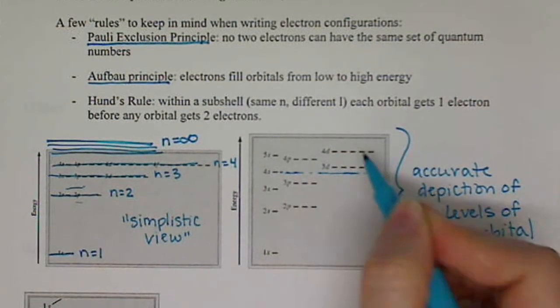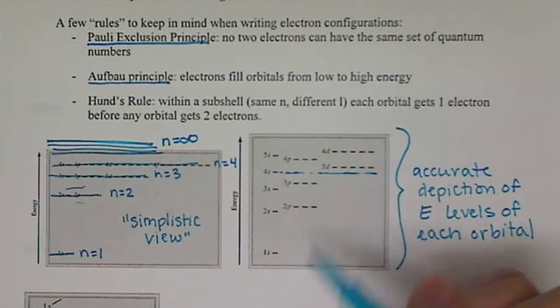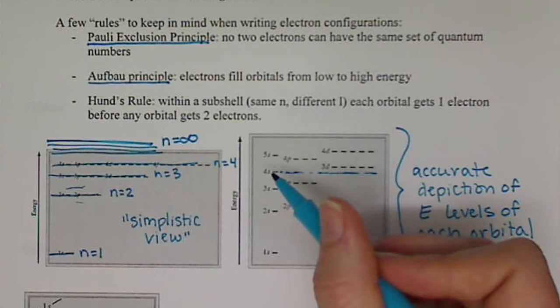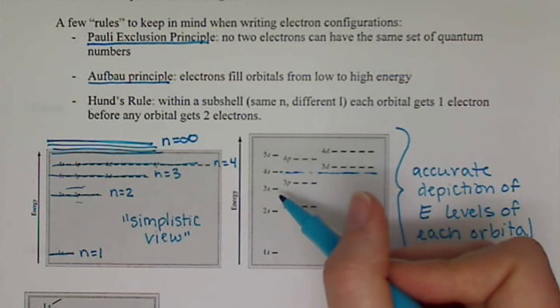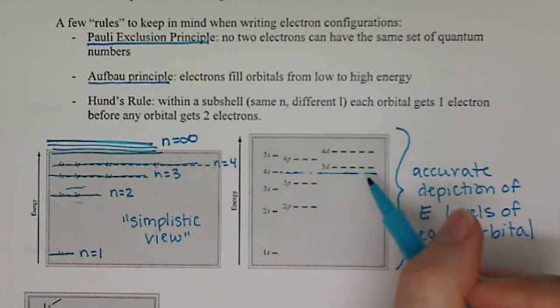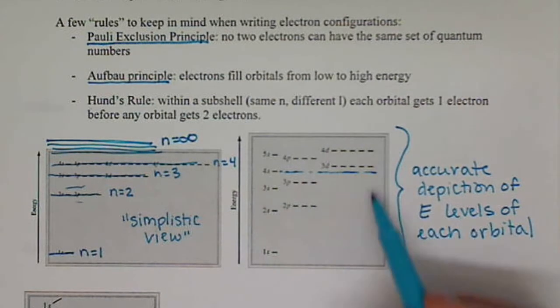This will come up again in another video where we're going to start taking away electrons. And when we're so close in energy, we can actually take or we can add electrons to higher energies before we do the lowers. Or if we're taking electrons away, we can take from the lower energy before we take from the higher energy. So we'll talk about this more later.